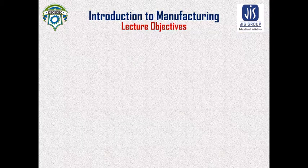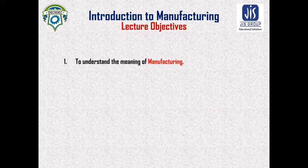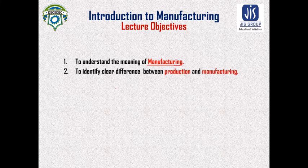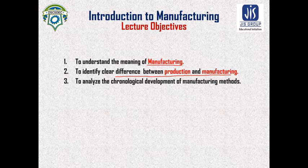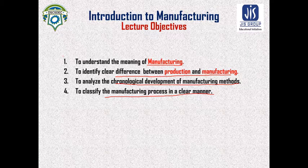The lecture objectives are: first, to understand the meaning of manufacturing; second, to identify the clear difference between the terms production and manufacturing; third, to analyze the chronological development of manufacturing methods; and fourth, to classify the manufacturing methods in a clear manner.